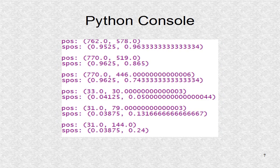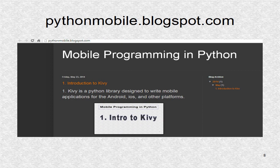The Python console shows the results from the printouts in the OnTouchdown function. The first three are due to clicks in the upper right corner, and the last three clicks are in the lower left corner of the screen. You can find additional information including the source code at pythonmobile.blogspot.com.